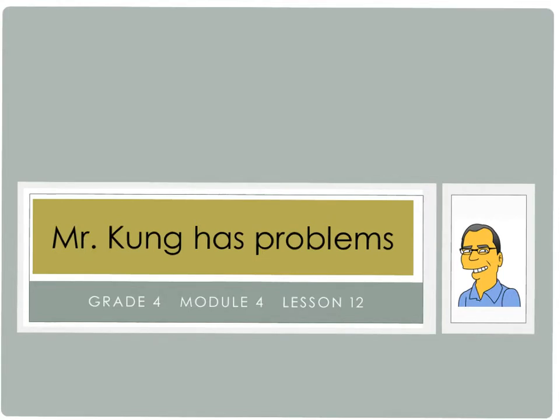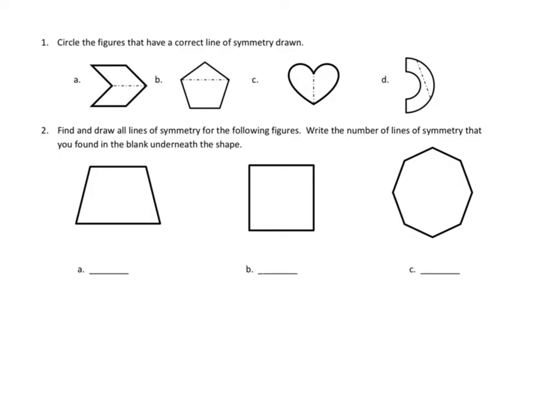So let's take a look at a couple of problems from today's homework. Let's take a look at problem number one. Problem number one asks us to circle the figures that have a correct line of symmetry drawn. I just want to take a quick look at maybe C and D and see if we think that those lines of symmetry are drawn correctly.